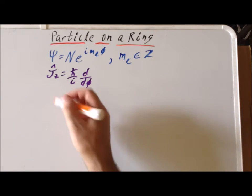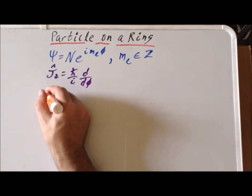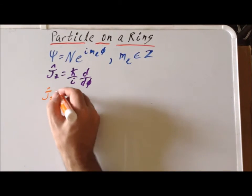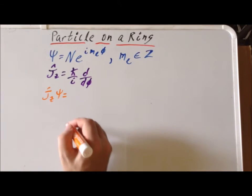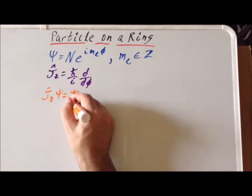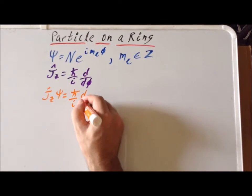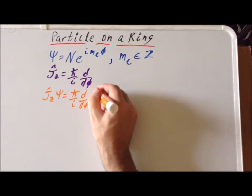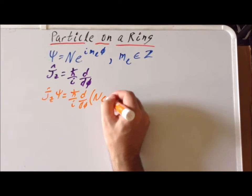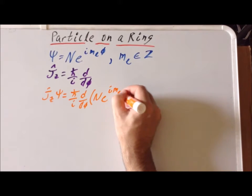So now we apply the angular momentum operator j sub z to psi. So we get h-bar over i d d phi times n e to the i m sub l phi.